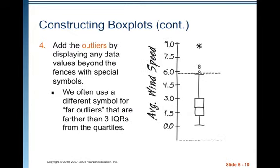Add the outliers by displaying any data values beyond the fences with special symbols. We often use a different symbol for the far outliers that are farther than 3 IQRs from the quartiles.